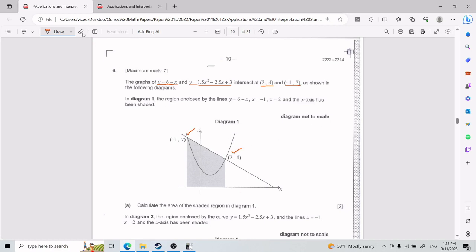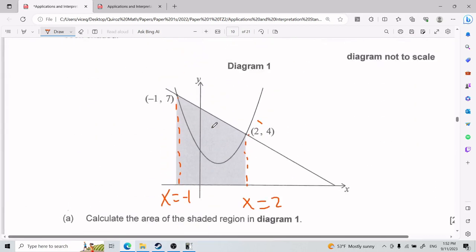In diagram 1, the region enclosed by the lines y equals 6 minus x, with x equals negative 1, which would be here, and x equals 2 has been shaded. So for part A, we need to calculate the area of the shaded region in diagram 1. Let's take a moment, zoom in a little bit, and see what we can do.